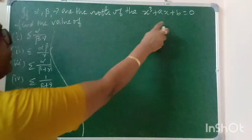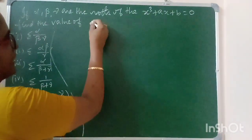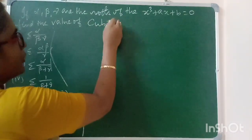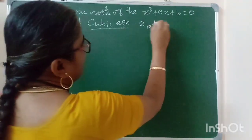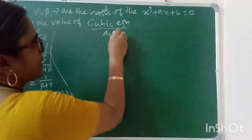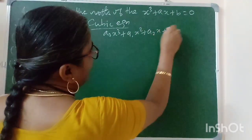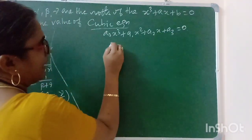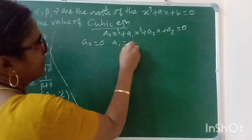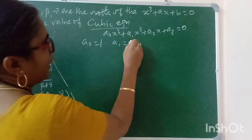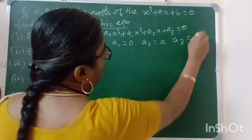You will get a cubic equation. How do you find a cubic equation? The general form is A0·X³ + A1·X² + A2·X + A3 = 0. Here A2 is equal to A, and A3 is equal to B.